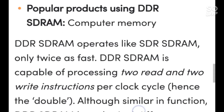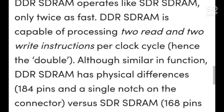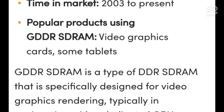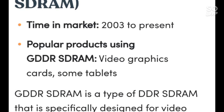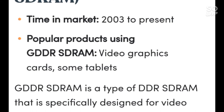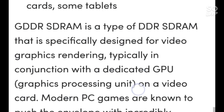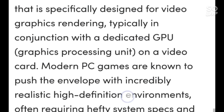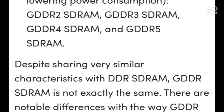Double Data Rate SDRAM (DDR SDRAM): time in market — 2002 to present. Popular products using DDR SDRAM include computer memory. Graphics Double Data Rate SDRAM (GDDR SDRAM): time in market — 2003 to present. Popular products using GDDR SDRAM include video graphics cards and some tablets.